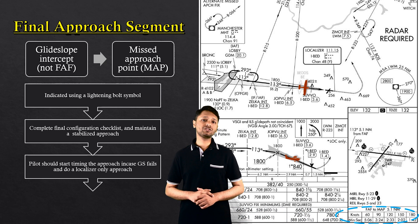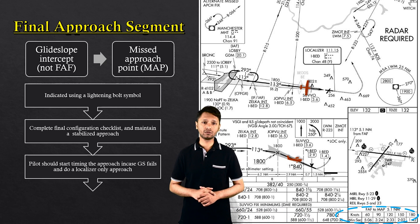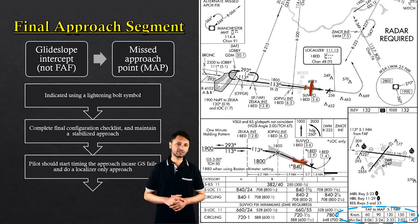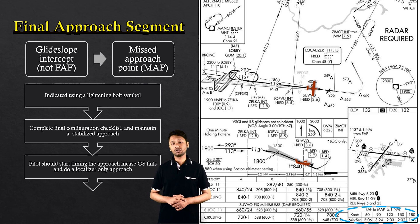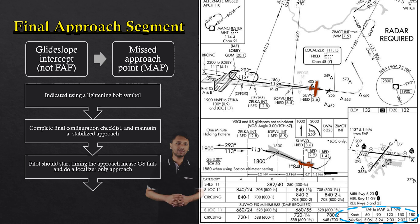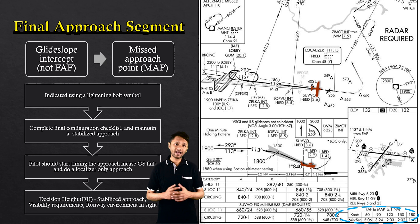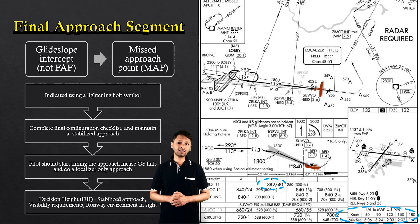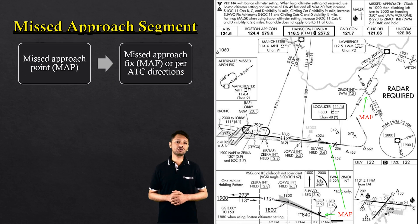The pilot should start timing the approach in case the glide slope fails. Timing is the only way to identify the missed approach point if we lose the glide slope, allowing the pilot to continue on a localizer-only approach. The pilot will only continue to descend past the decision height of 382 feet provided the runway environment is in sight; if not, the pilot should initiate the missed approach procedure.